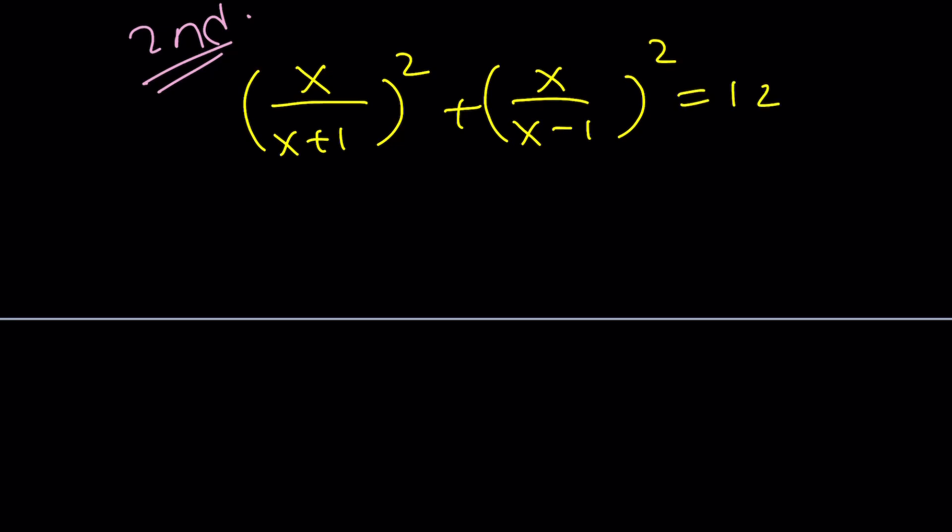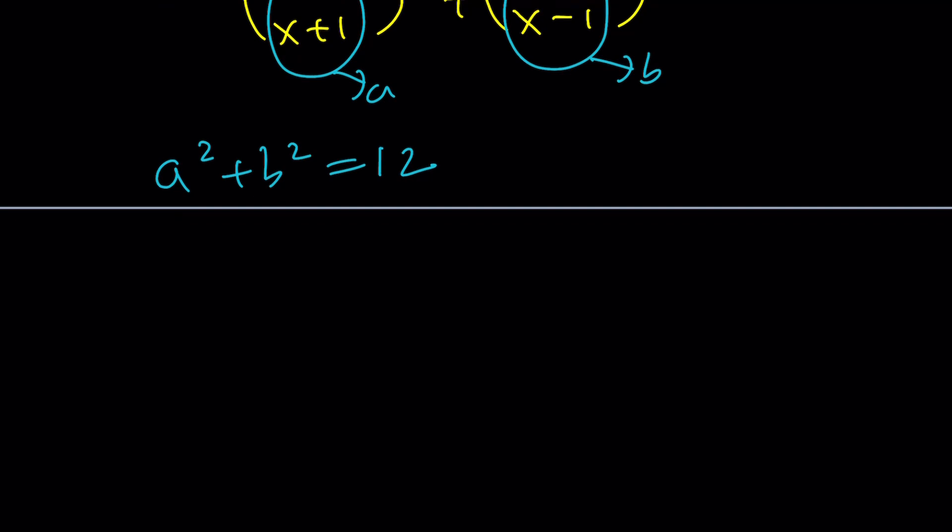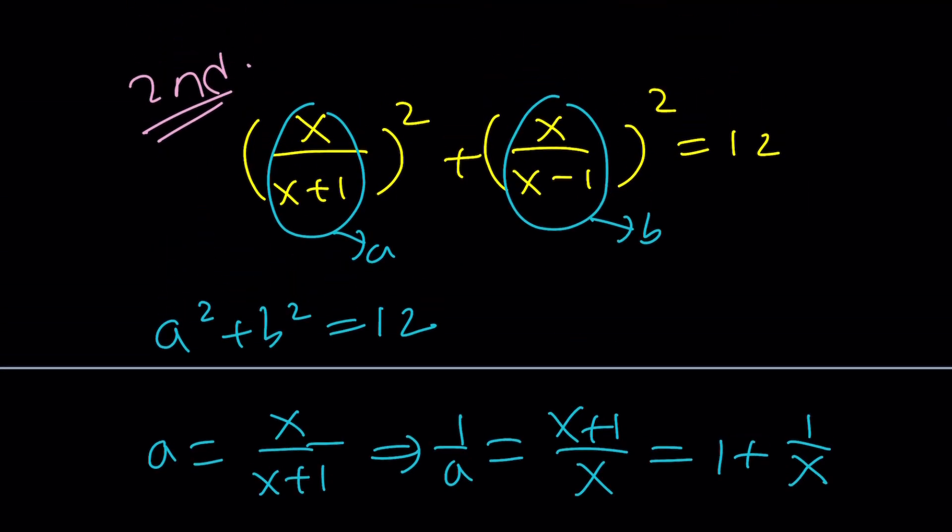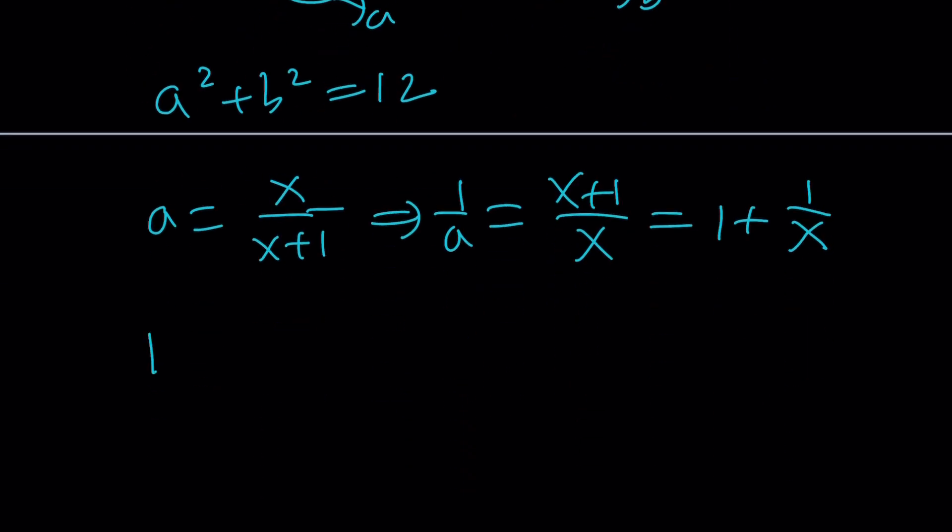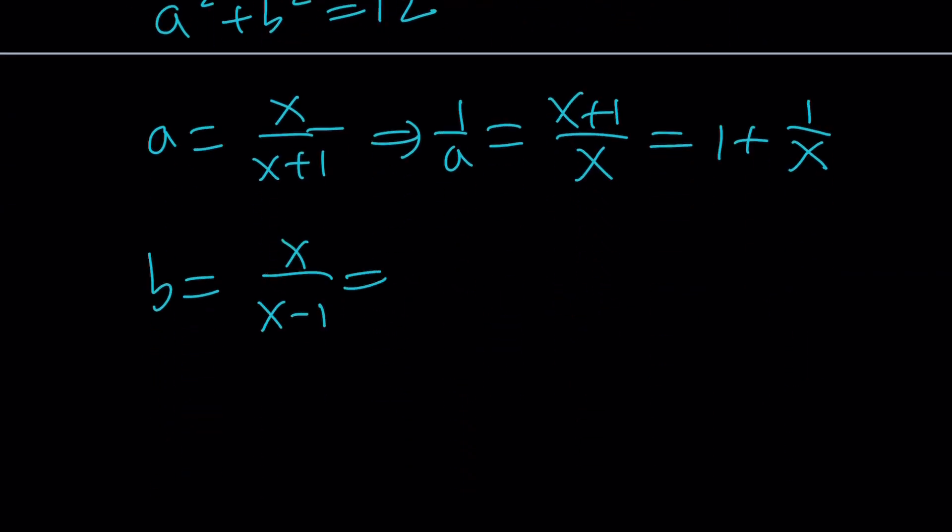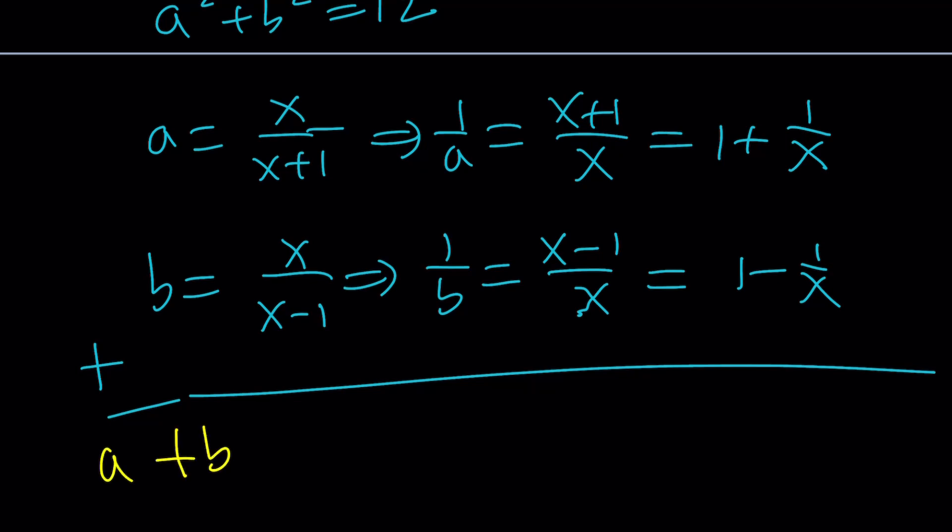So the second method is actually really cool because I'm going to call this a and I'm going to call this b. So from here, I get a squared plus b squared equals 12. And some people are like, so what? Exactly. So here, one of the things that I want you to pay attention to is this. a is equal to x over x plus 1. a is not that interesting, but 1 over a is interesting because it's x plus 1 over x. And it's actually 1 plus 1 over x. Make sense? Great. Maybe you could leave it at that as well. We'll see. And let's do the same thing with b. b is equal to x over x minus 1. And then 1 over b is going to be x minus 1 over x, which is 1 minus 1 over x. Awesome. What do you say? Add these up. Obviously, because 1 over x is going to cancel out.